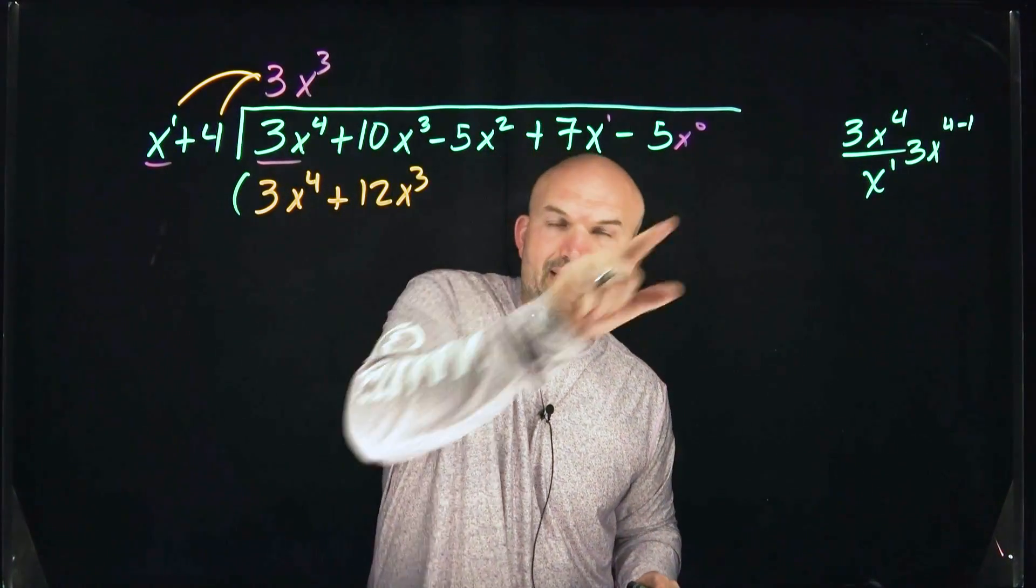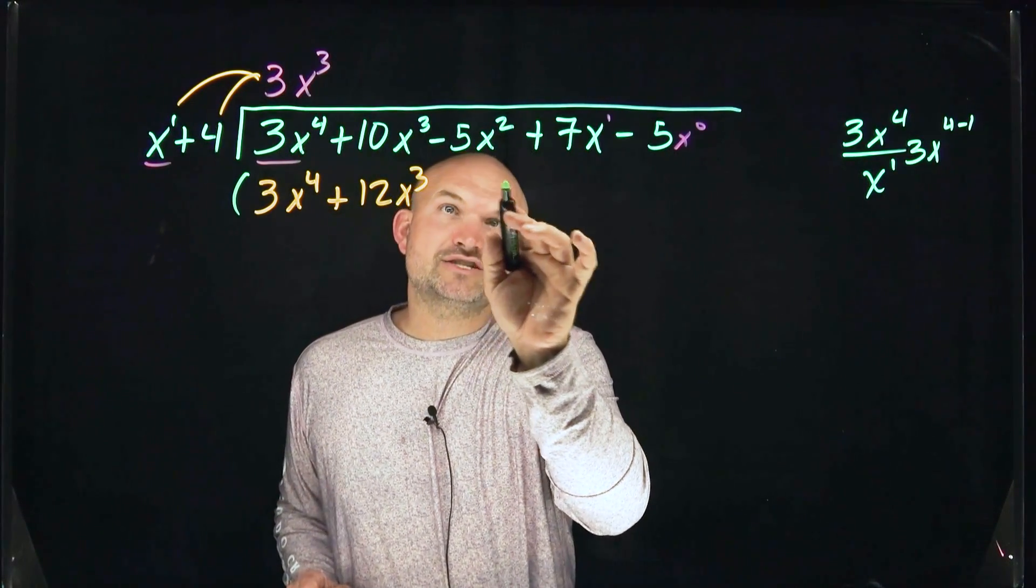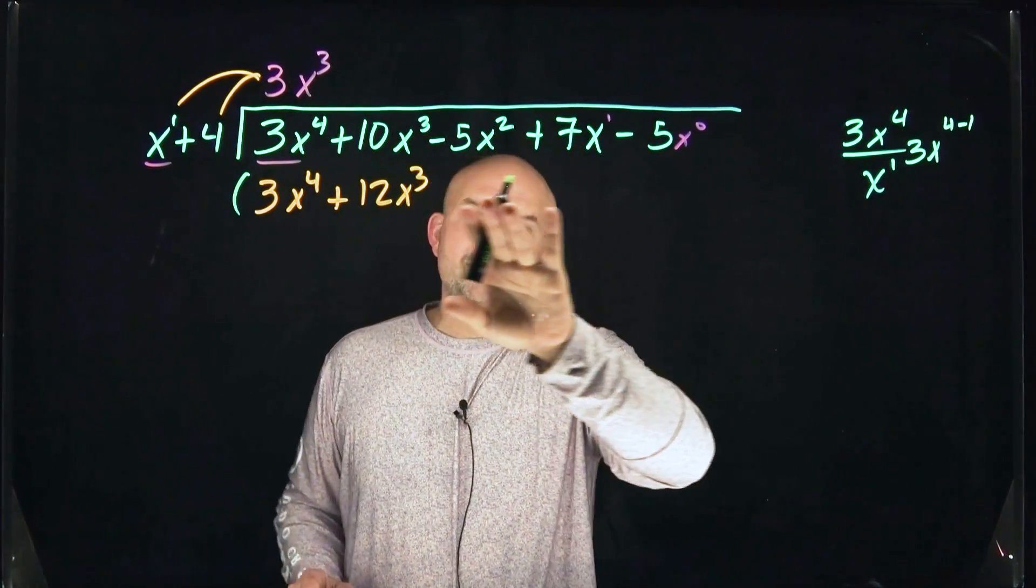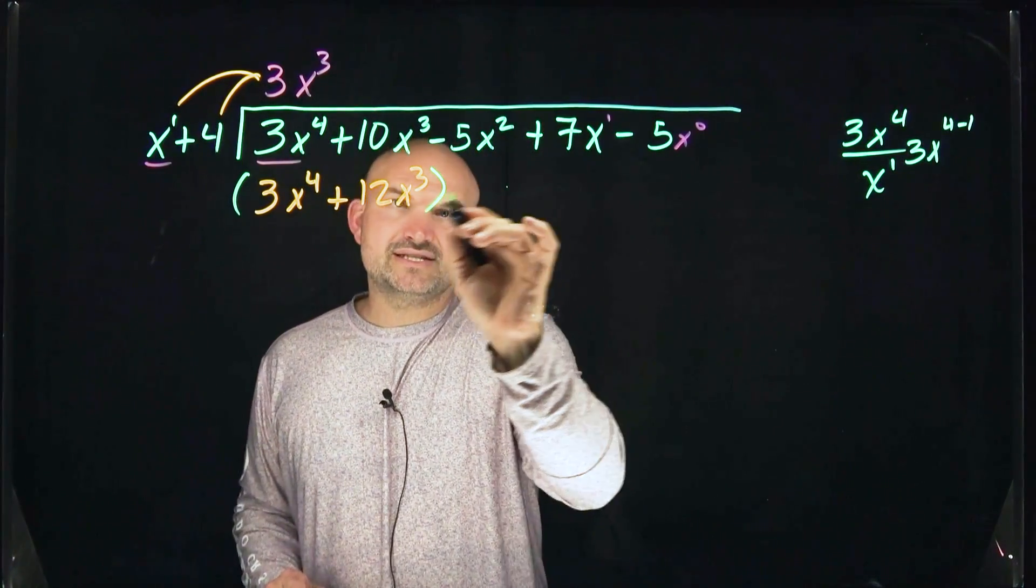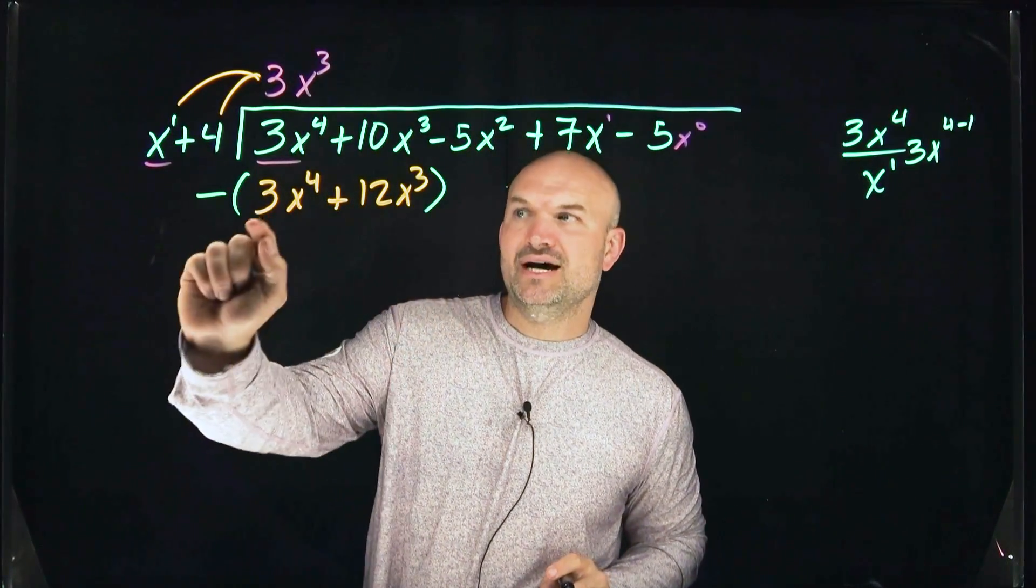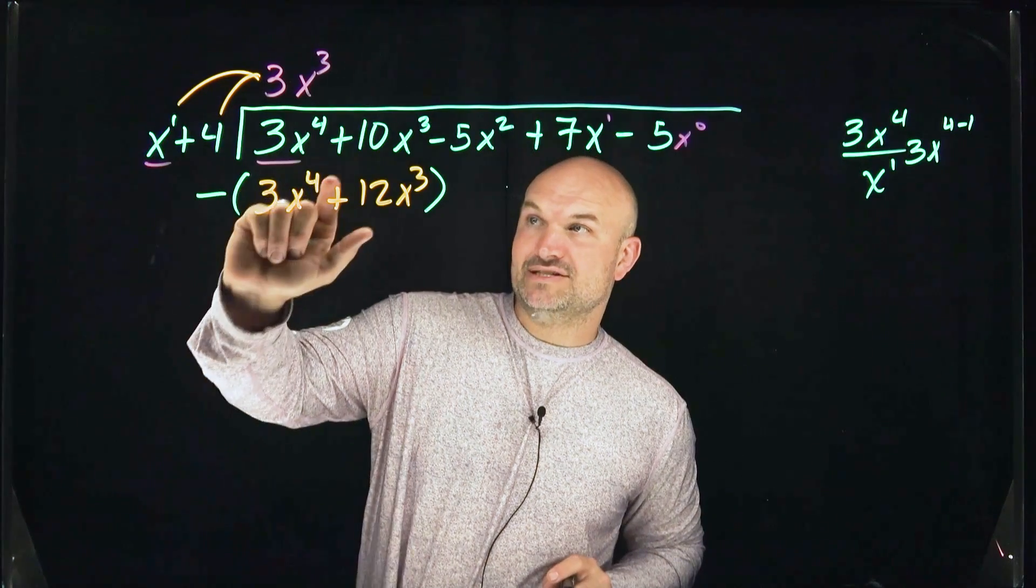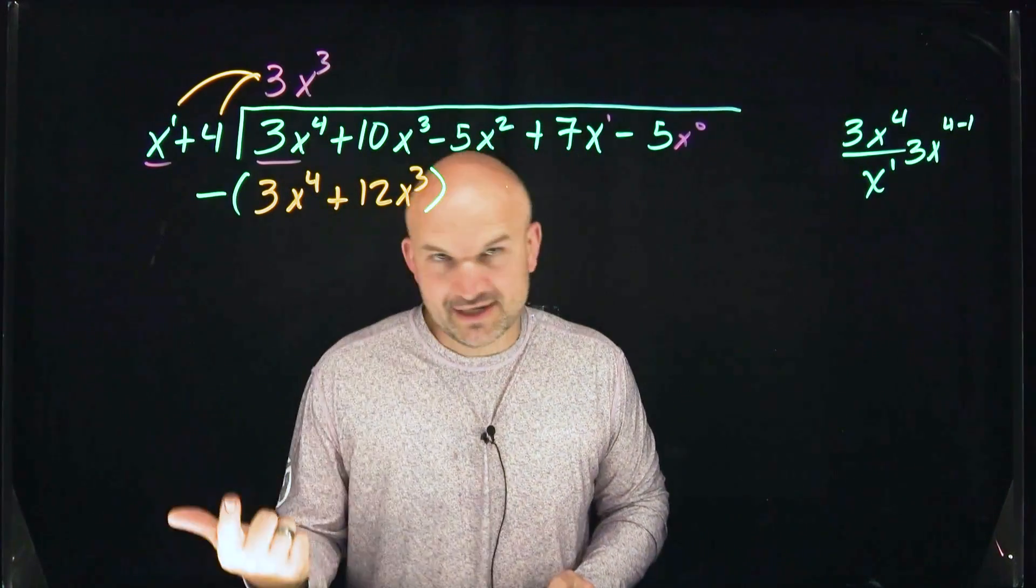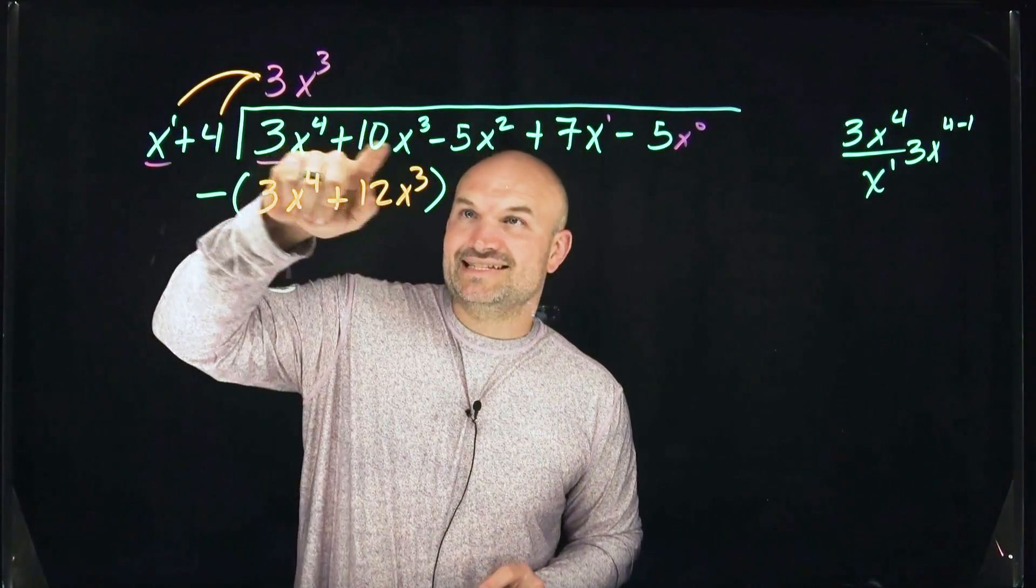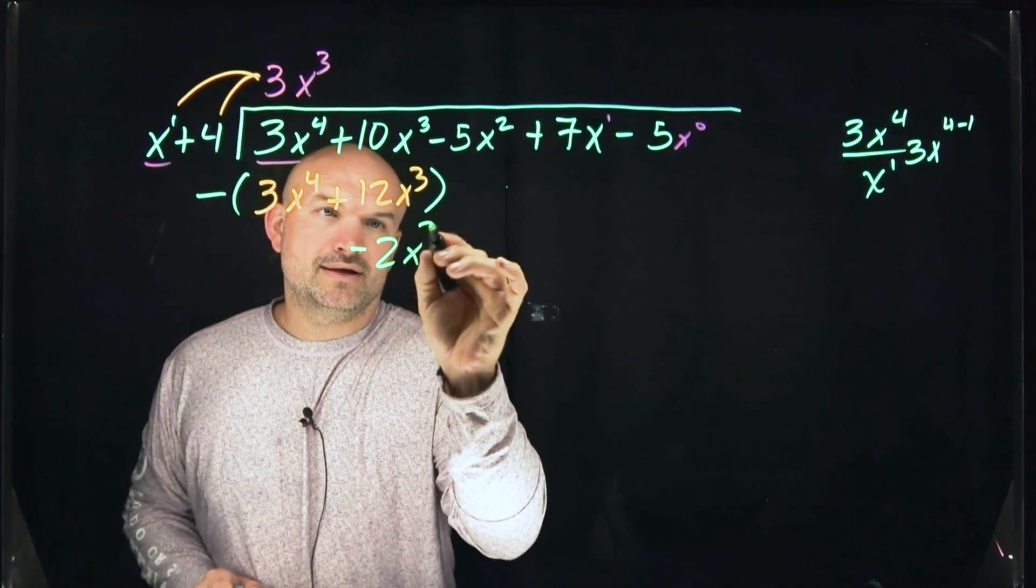If you did your long division correct, these two terms are always going to be exactly the same because the next step that you're going to need to do is you're going to need to subtract your rows. There's a couple of different ways we can teach long division. You could use place values with 0x squared, 0x plus 0, and then subtract them. You could also do the bring it down method. Basically, we don't have any more values here, so I'm going to use these parentheses and eventually bring these down to the next term. 3x to the fourth minus 3x to the fourth is going to be 0x to the fourth. 0 times anything is just 0, so I'm just going to disregard that and leave it off. 10x cubed minus a positive 12x cubed is now going to be negative 2x cubed.